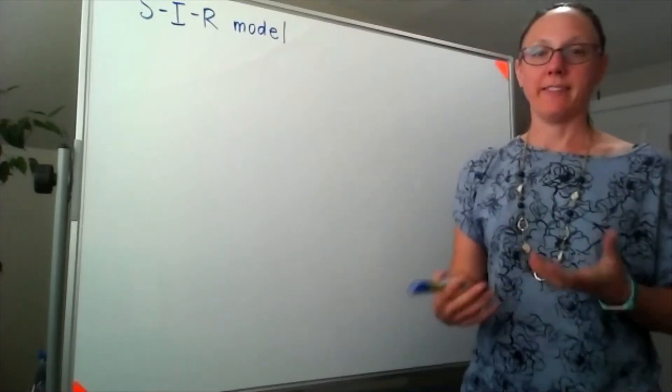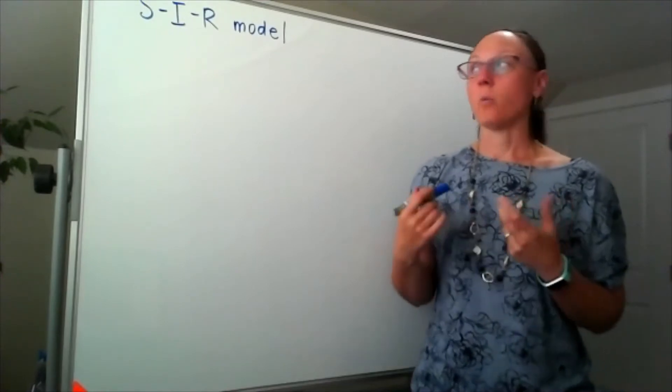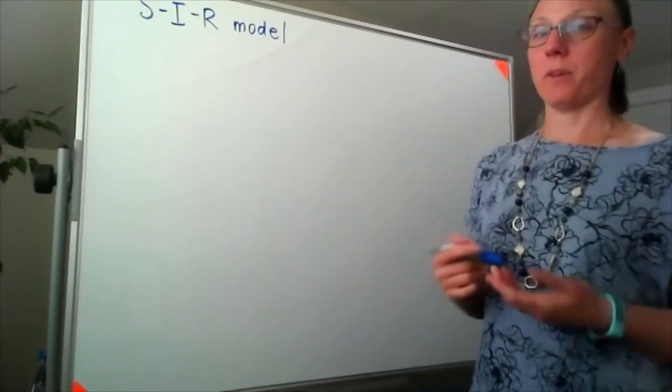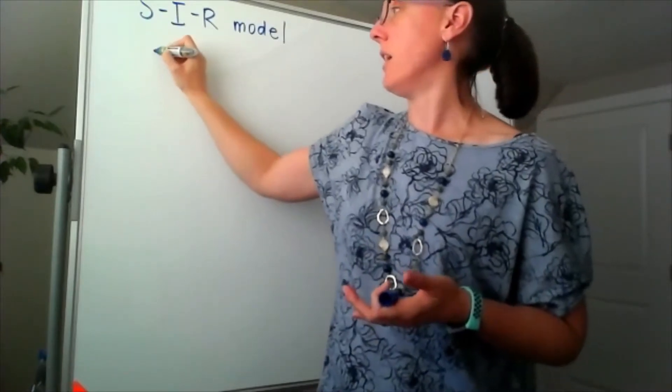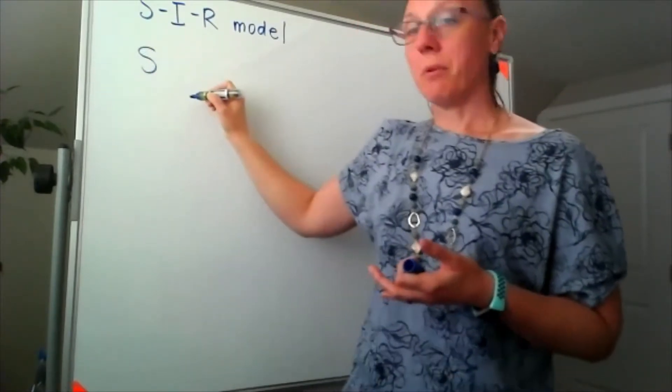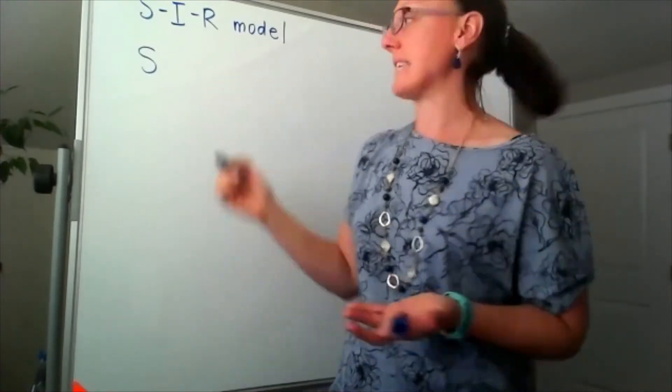The whole idea with the SIR model is that we're assuming we have some population, and in that population some people fall under the group of being susceptible, meaning they might get infected by something.